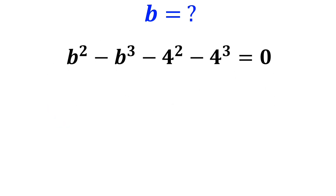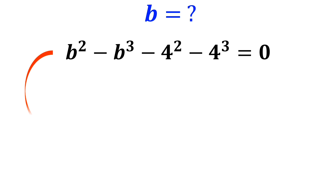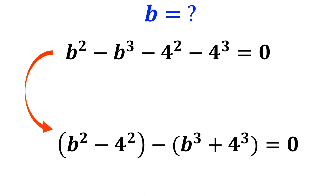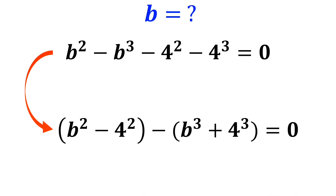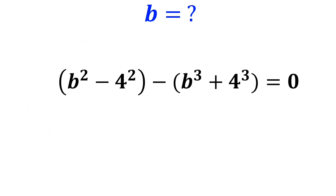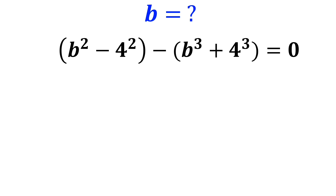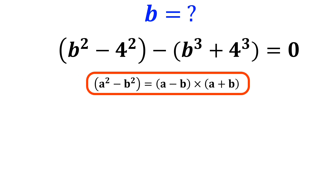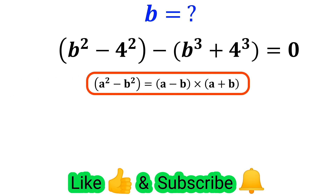Now we rewrite the equation as b squared minus 4 squared minus b cubed plus 4 cubed is equal to 0. According to the conjugate identity, a squared minus b squared is equal to a minus b times a plus b.